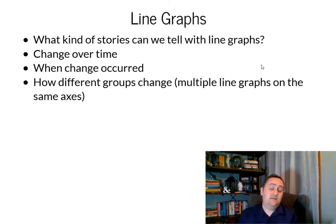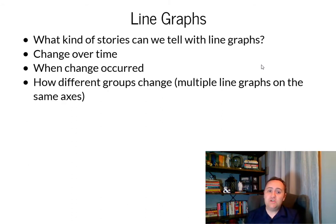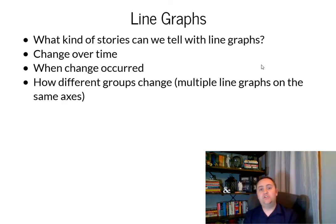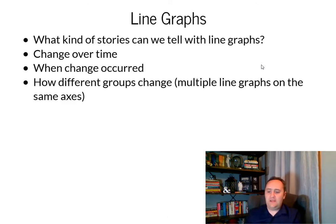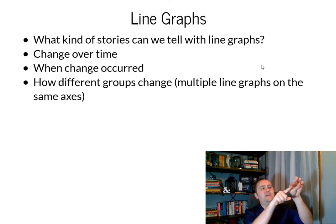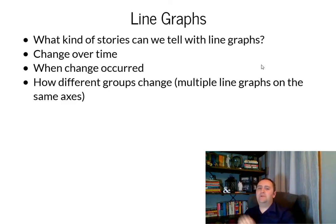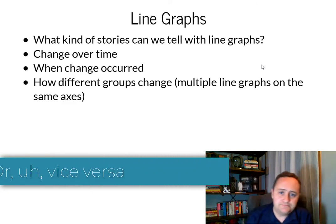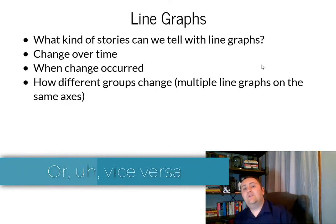So things that line graphs are really good at telling: stories about change over time, when that change occurred, and you can also compare different line graphs on the same set of axes very easily without getting too cluttered — to show how different groups are changing over time. For example, maybe you have your firm and your competitor's firm, and over time you see your firm going up and your competitor going down. That's a very clear story.